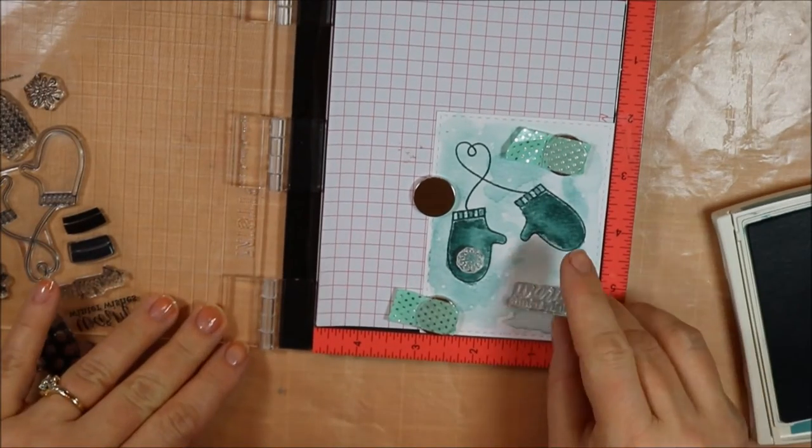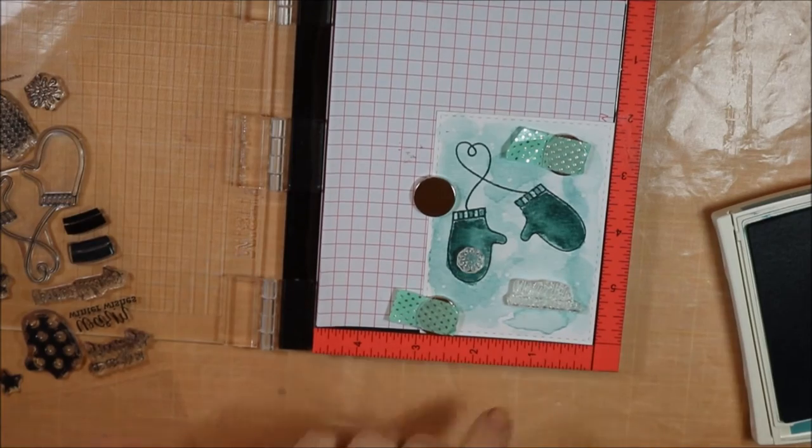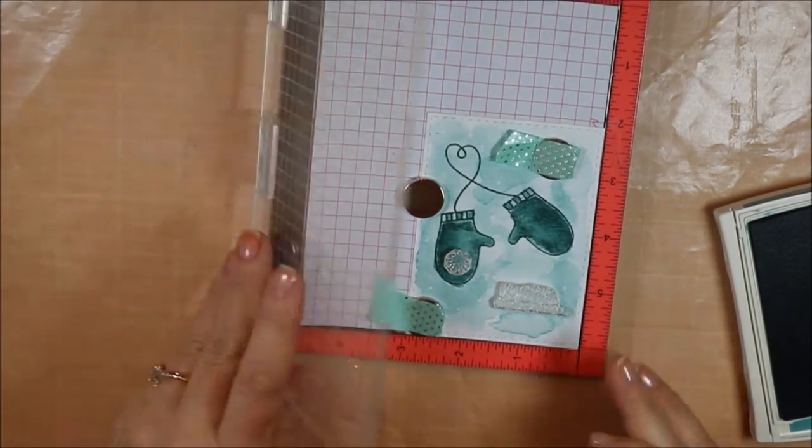I'm going to finish up my stamping with a couple more things in this set. There's several different sizes of snowflakes. I'm going to put one of them on there and the sentiment down below.